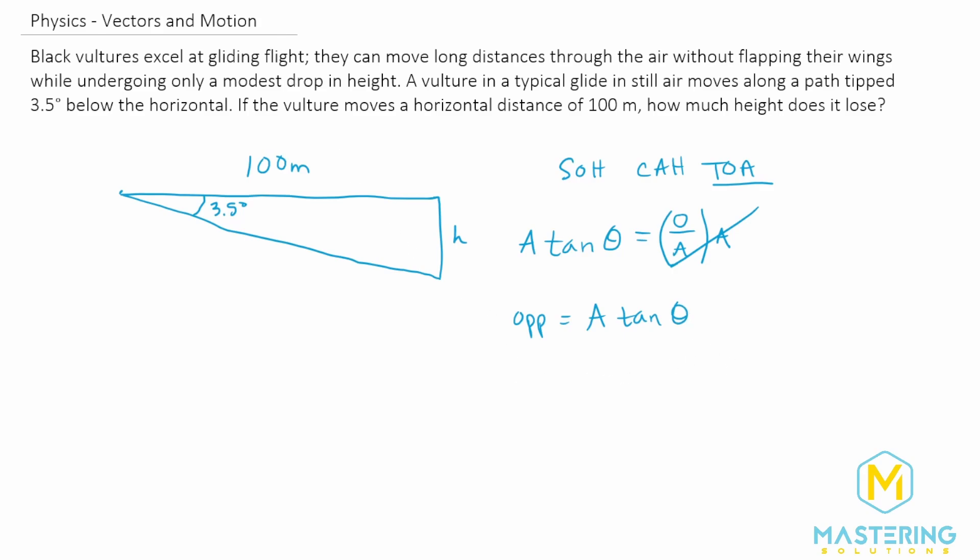So now we can just plug in our numbers into this. So we have the opposite is equal to the adjacent, which is 100 meters, times tangent of 3.5 degrees, which will give us,